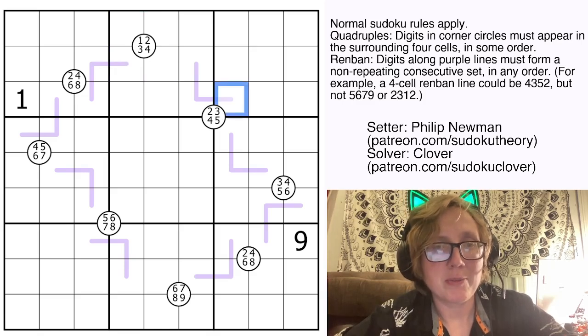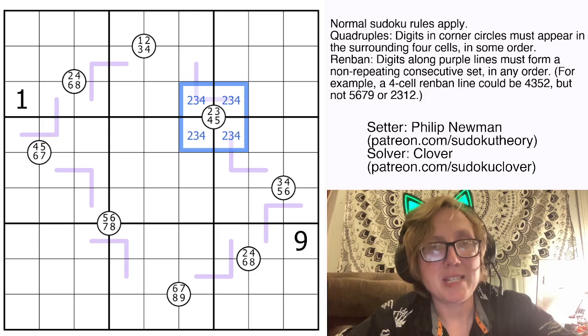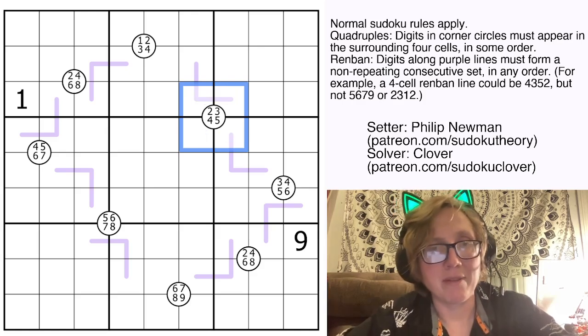For example, we have 2, 3, 4, and 5 in this one, and so these four cells have to contain the digits 2, 3, 4, and 5.